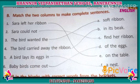The second one is: Sara could not find her ribbon. Match two with option C. The third one: the bird wanted the soft ribbon. Match three with option A.